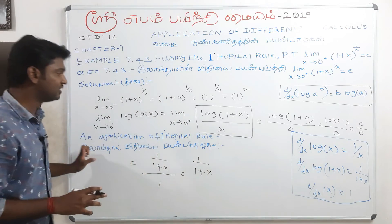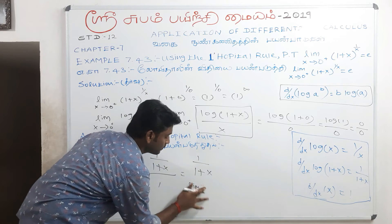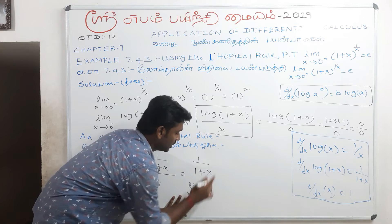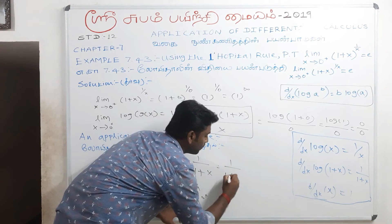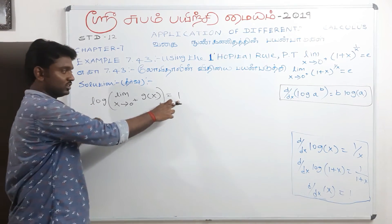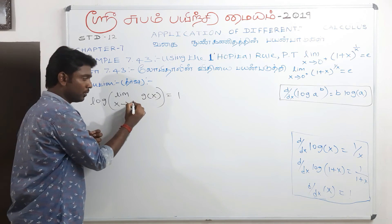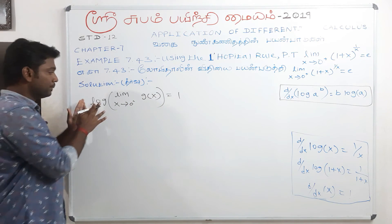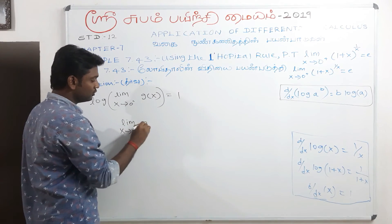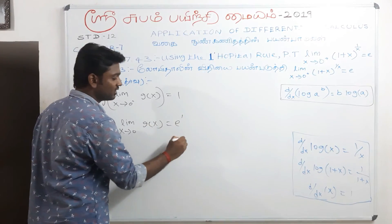Now we substitute the limit x to 0: 1 divided by (1 plus 0) equals 1 divided by 1, which equals 1. So log g of x equals 1 as x approaches 0 plus. Therefore, limit x to 0 of g of x equals e to the power 1, which gives us e. The answer is e.